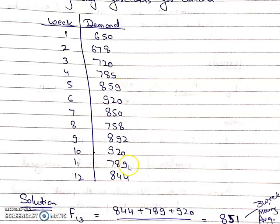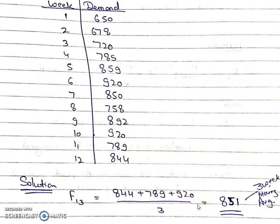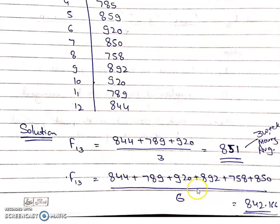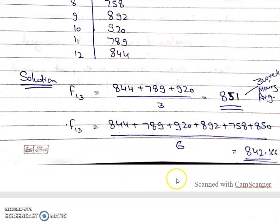Firstly, we calculate the forecast for the 13th period through the 3-week moving average method. We take the values of 3 weeks starting from the last: 12th, 11th, and 10th week. We simply add the 3 values and divide by 3, and the forecast for the 13th week is 851. For the 6-week moving average method, we take 6 values starting from the last: 12th, 11th, 10th, 9th, 8th, and 7th week, add all values and divide by 6. The 13th week forecast is 842.166. It is very clear that if we need a more accurate forecast, we need more data.